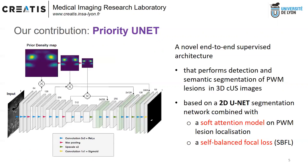Our contribution is to fill this gap by proposing a novel deep architecture entitled Priority Unit, which is based on a 2D U-Net segmentation backbone. The main methodological novelty is that we add a soft attention model based on prior lesion density maps that are fed into the network through skip connections.